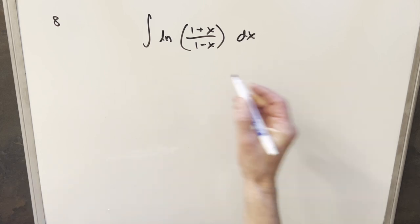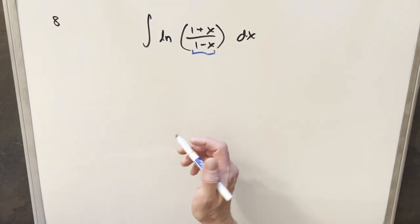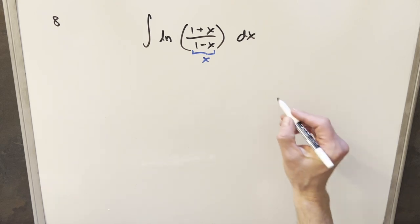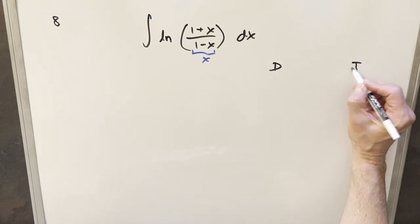To get started with this, I noticed we have a complicated input to natural log that we're not used to. But what I want to do is not really worry about that and just think of it like it's natural log of x. If I do that, the way we want to handle this integral is to do integration by parts using the DI method.